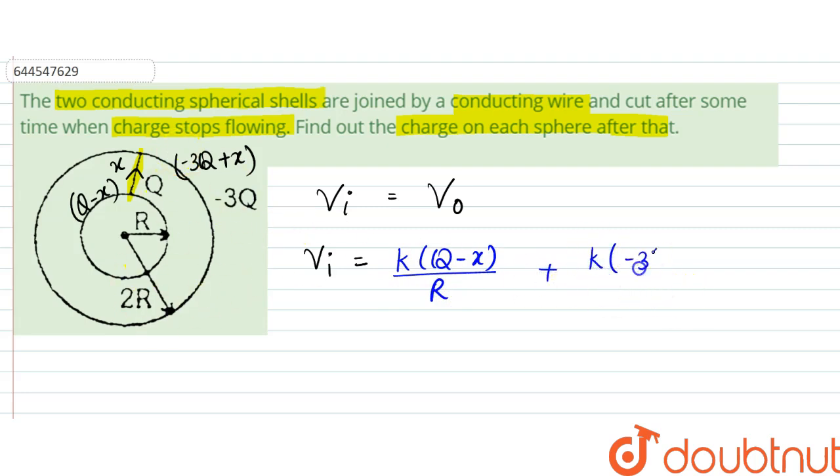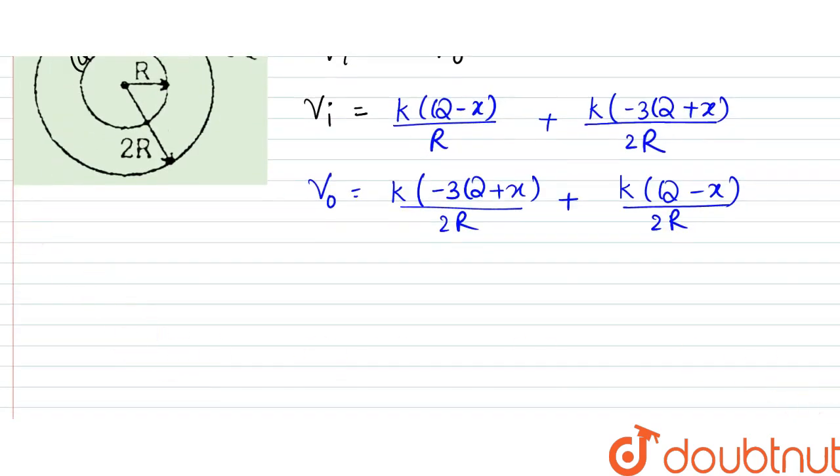And outer potential would be equal to k, first of all due to the charges on its shell that is this much, plus due to the inner shell's charge at this point. So that would be equal to k(Q - x)/2R.